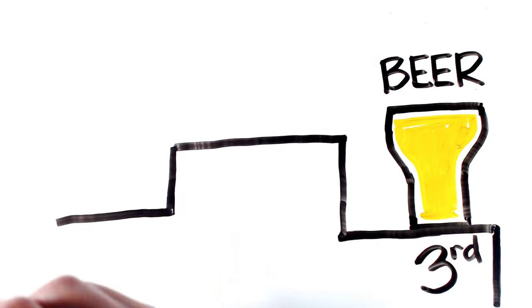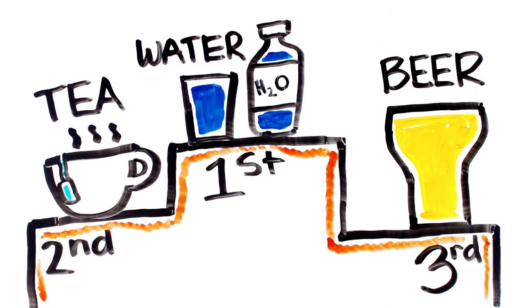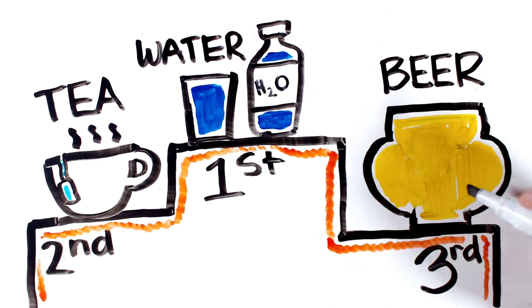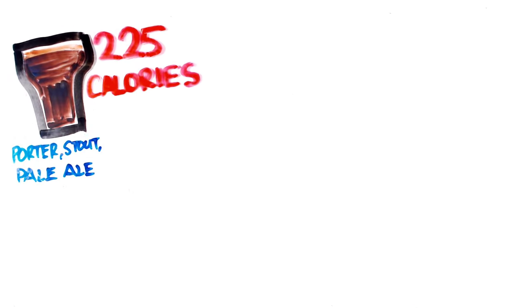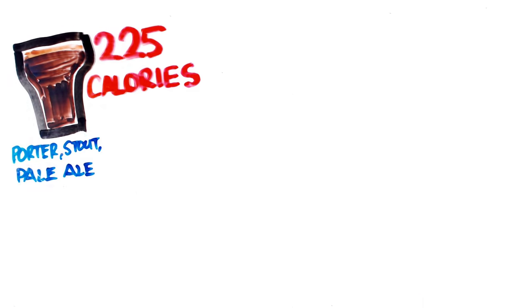Now did you know that beer is the third most popular drink in the world after water and tea? As popular as it may be, it's not exactly calorie friendly. Some of the heaviest beers you can get at a bar are the darker varieties such as stouts, porters, and pale ales, netting on average 225 calories per glass.